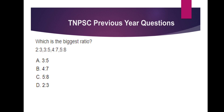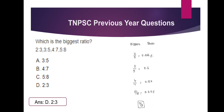Find the biggest ratio among: 2 to 3, 3 to 5, 4 to 7, and 5 to 8. Convert to decimals: 2/3 = 0.66, 3/5 = 0.60, 4/7 = 0.57, 5/8 = 0.625. The biggest is 0.666, which is 2 to 3. Option D is the answer — 2 to 3 is the ratio.